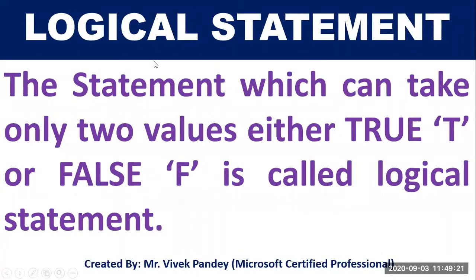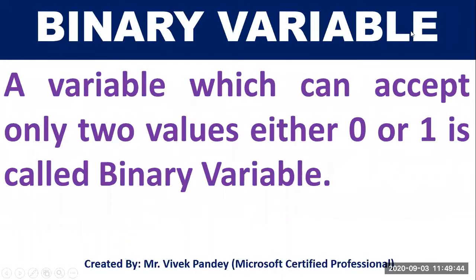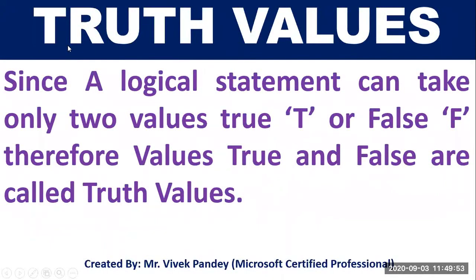What is a logical statement? A statement which can take only two values — either true or false — is called a logical statement. What is a binary decision? A decision which results in either true or false is called a binary decision. What is a binary variable? A variable which can accept only two values — either zero or one — is called a binary variable.